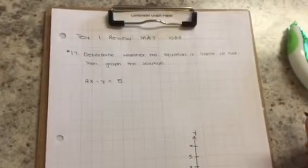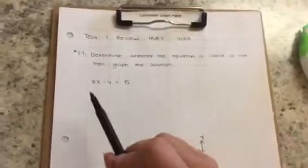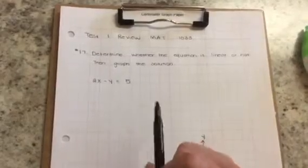All right, this is the test 1 review for MAT1033 intermediate algebra. We're going to be looking at number 17. Number 17 says, determine whether the equation is linear or not, then graph the solution. So this is my equation, 2x minus y equals 5.